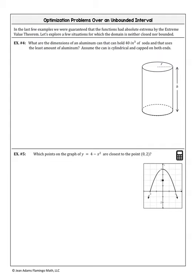Examples four and five involve an open or unbounded domain. Example four: what are the dimensions of an aluminum can that can hold 40 cubic inches using the least amount of aluminum? Least amount of aluminum means we're minimizing surface area. Assume the can is cylindrical and capped on both ends. So we are minimizing surface area, and our primary equation is SA = 2πr² + 2πrh — the two circles plus the lateral surface (which is like a rectangle: circumference times height).